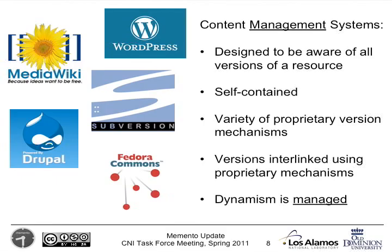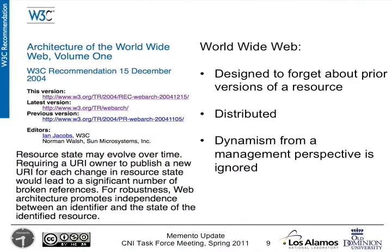The web has various content management systems designed to be aware of all versions of a resource. They're kind of self-contained, with a variety of proprietary version linking and interlinking mechanisms, and this has the great advantage that dynamism is managed. However, the web in general is completely the opposite — it's designed to forget about prior versions of a resource. It's very distributed and hence the management of the whole thing is an impossibility.